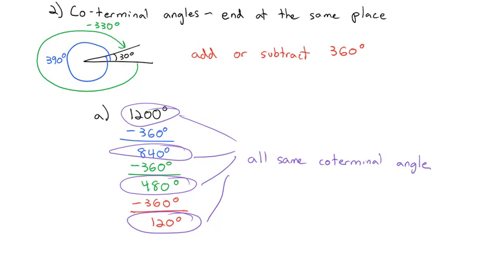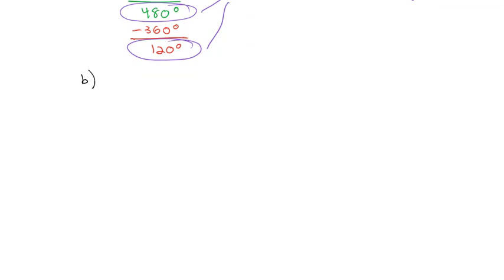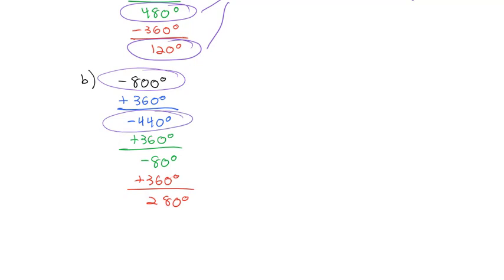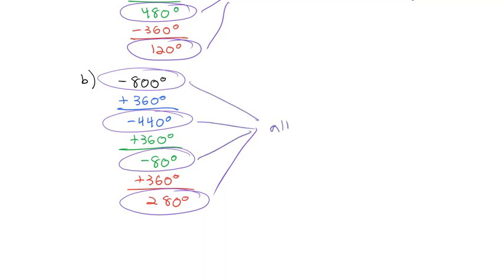We can also work with negative numbers. With a negative 800-degree angle, since it's negative we add 360 degrees to get negative 440 degrees. Adding 360 again gives negative 80 degrees. Adding 360 once more gives our first coterminal angle between 0 and 360 — a 280-degree angle. So negative 800, negative 440, negative 80, and 280 degrees are all coterminal angles.